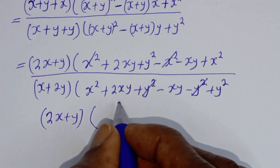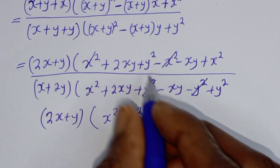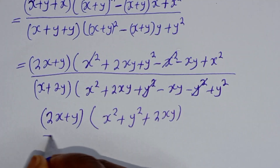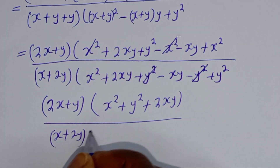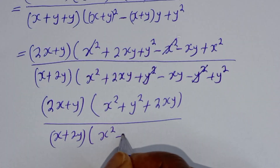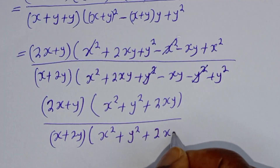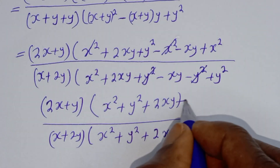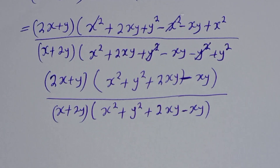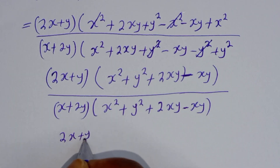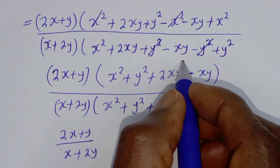From the denominator, terms cancel. You are left with s plus y bracket: s squared plus y squared plus 2sy, divided by s plus 2y bracket: s squared plus y squared plus 2sy minus sy minus sy. This simplifies to 2 times s plus y, over s plus 2y, since the bracket terms cancel.